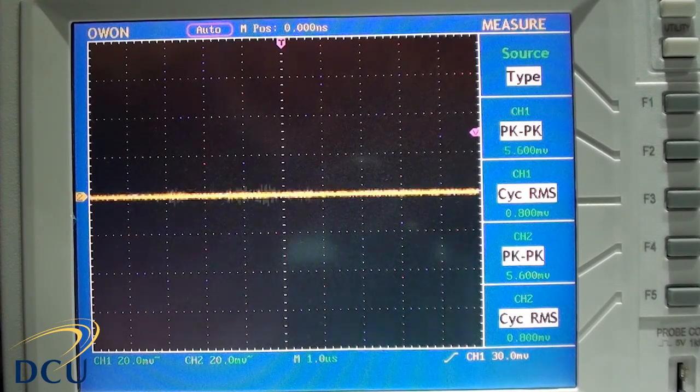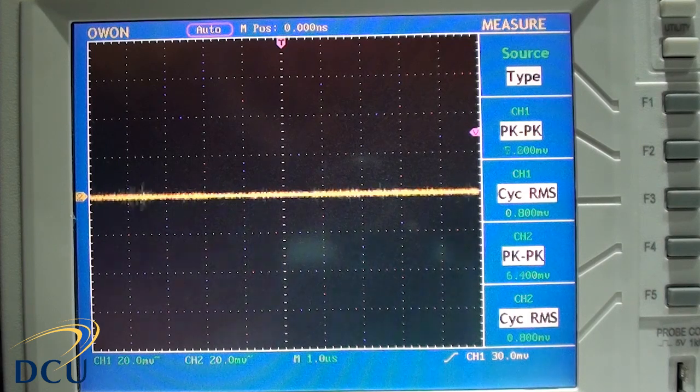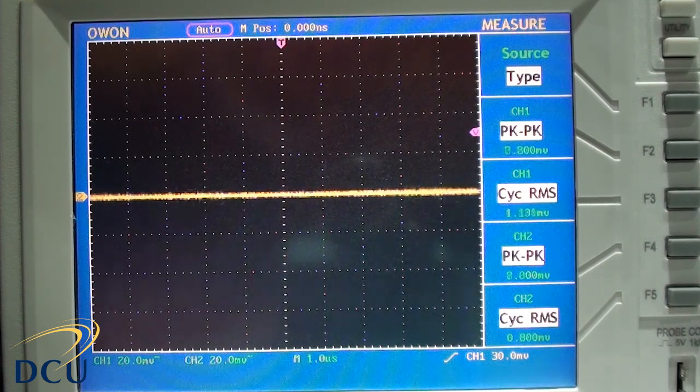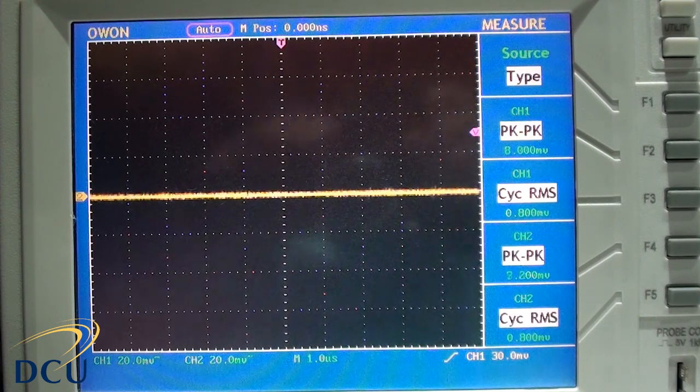We also measure the RMS value which is useful for periodic signals but not so useful in this case, but we can see that it too is sitting at a value of 0.8 millivolts.